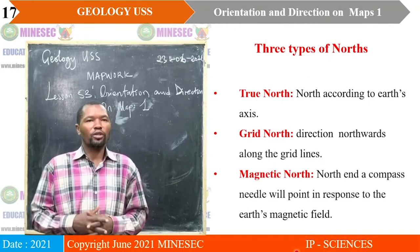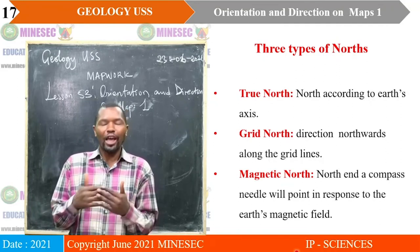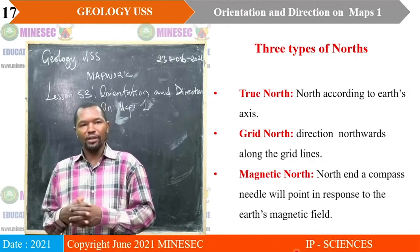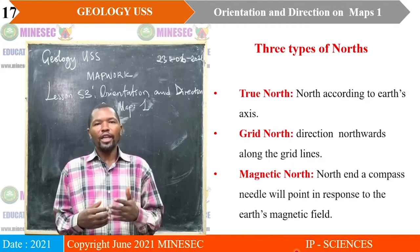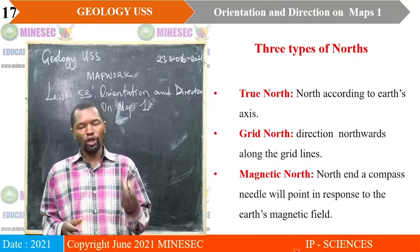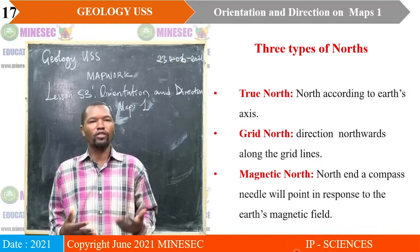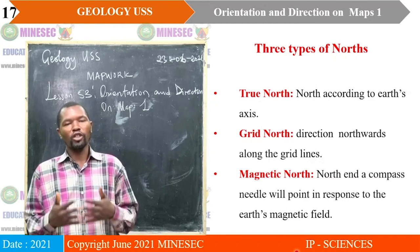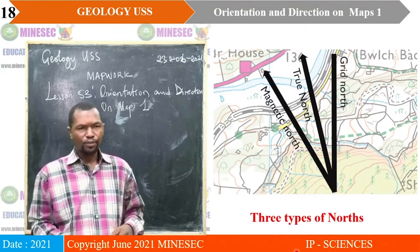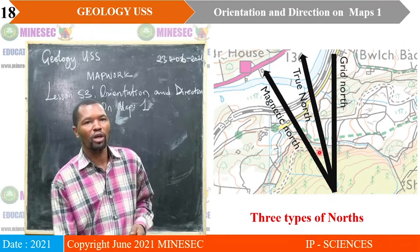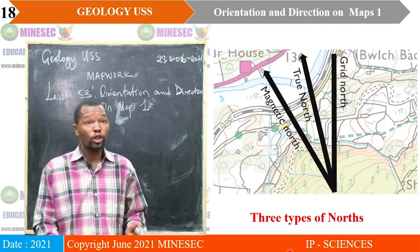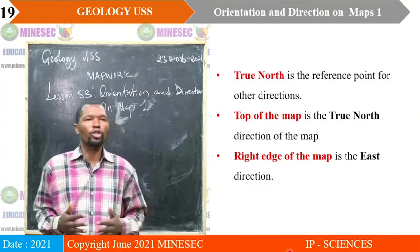We have different types of north. We have the true north, which is the north according to the earth's axis. We have the grid north, which is the direction northwards along the grid lines. We have the magnetic north, which is the north end of a compass needle pointing in response to the earth's magnetic field. That is why iron-rich materials can be attracted to a bar magnet, because of the magnetic north controlled by the core of the earth, where iron-rich materials are produced and drive the earth's magnetic field.